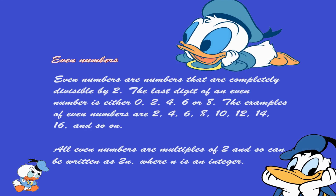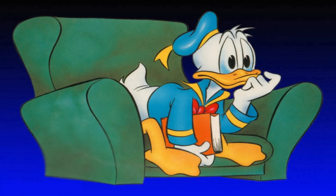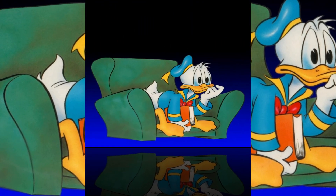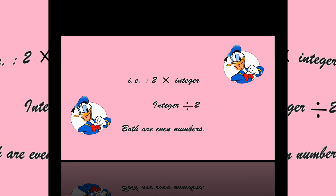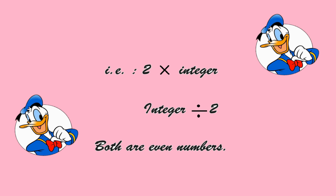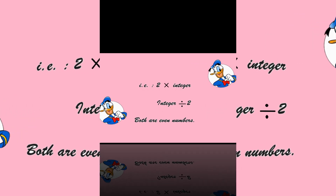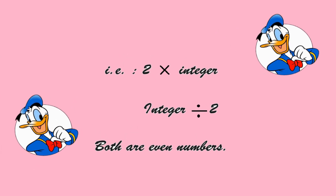All even numbers are multiples of 2 and so can be written as 2n, where n is an integer. That is, 2 into any integer is equal to an even number, or any integer which is directly divisible by 2 is an even number. So both types of numbers are even numbers.